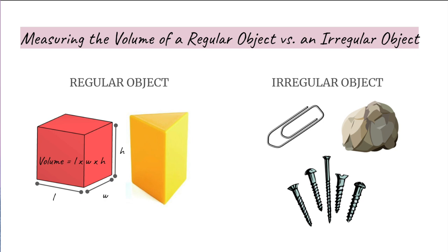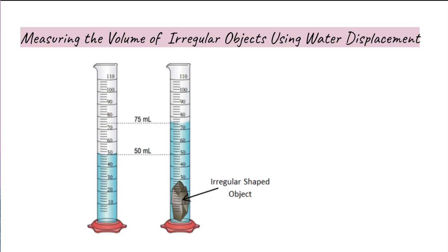Irregular objects are those which do not have standard polygons for faces, such as a paper clip, a screw, or a rock. A method called water displacement can be used to measure the volume of an irregular object. To measure the volume of a rock: fill a graduated cylinder with water and record the initial volume, then place the rock in the cylinder and observe the water level rise. The amount the water level rises equals the amount of water displaced. Record your final measurement — note that the final volume is not the volume of the object; rather, the displaced water equals the object's volume.